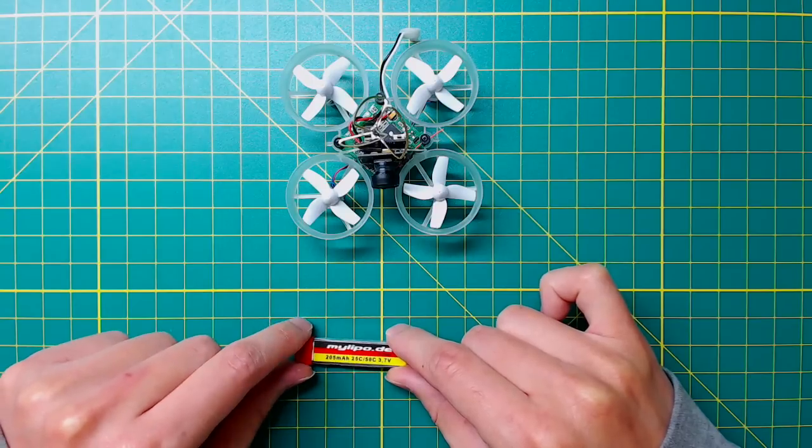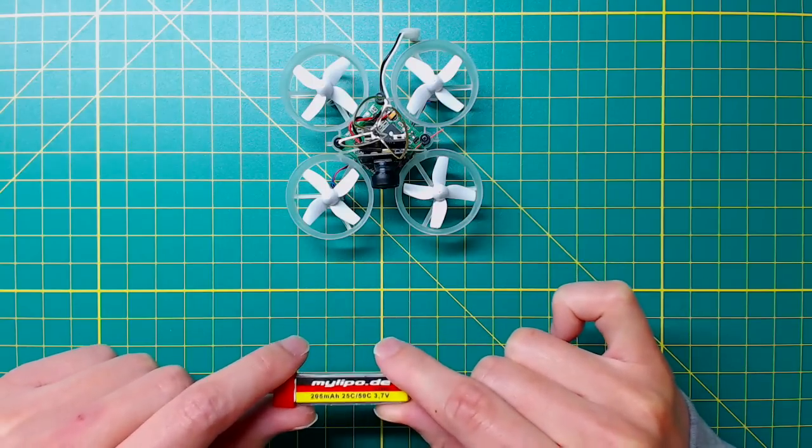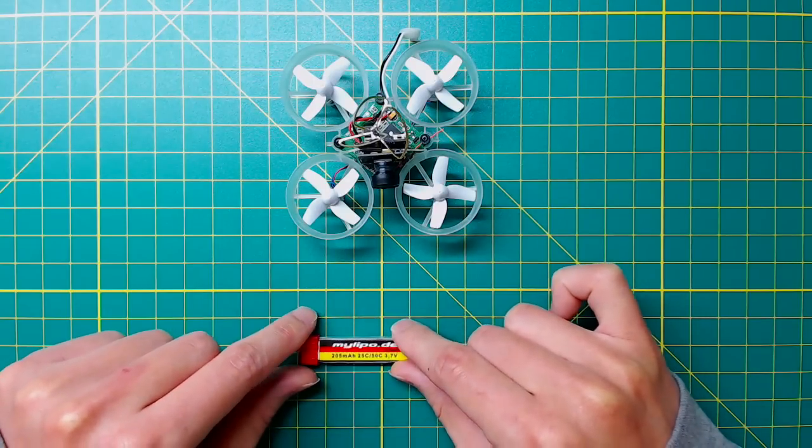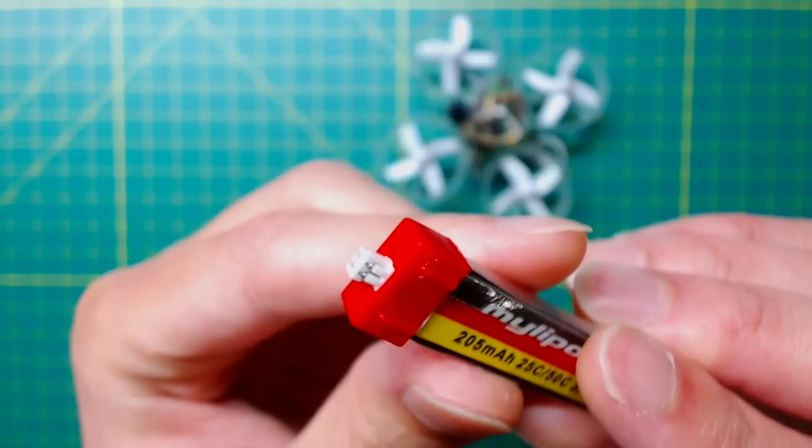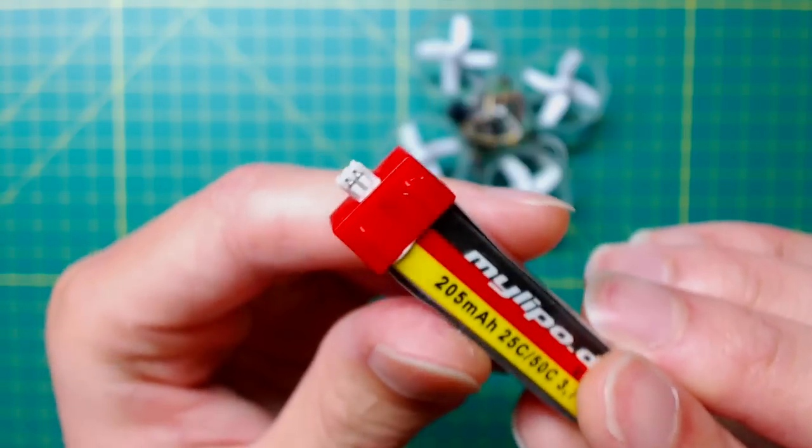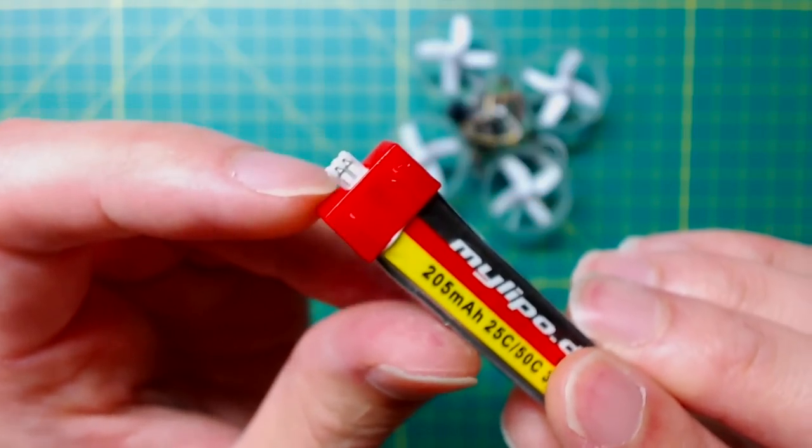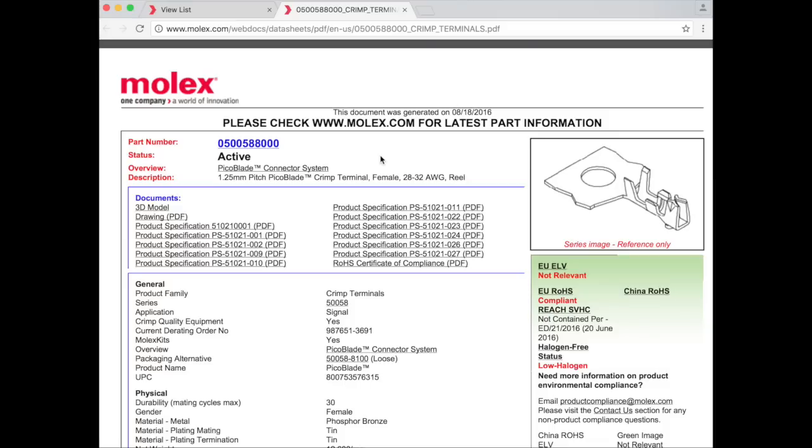No matter how hard you try to take good care of it, typical LiPo batteries have definitely more than 100 cycles, so this is not really about the chemistry in the battery but most likely the tiny little connector.